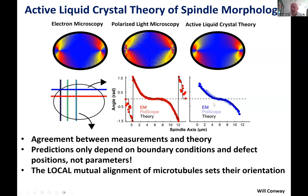Yet there is still quantitative agreement. This really argues that the orientation of microtubules in the spindle is set by their local and mutual alignment — microtubules locally want to line up relative to each other, and that's essentially sufficient to explain their orientation everywhere throughout the spindle.